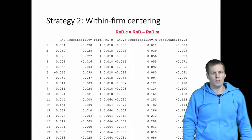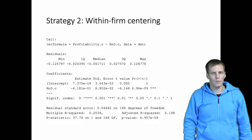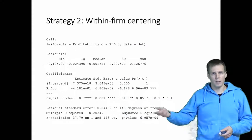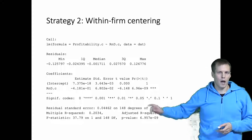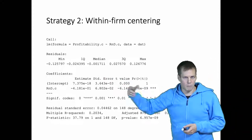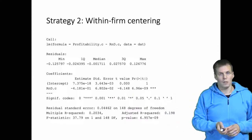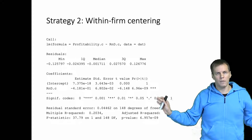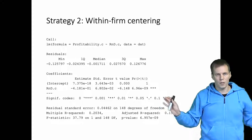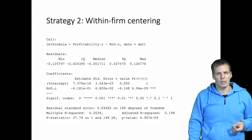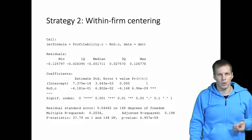Then we run a regression analysis using only the mean-centered dependent variable and the mean-centered independent variable, and we get the same regression estimate as before — the within effect. This is a regression analysis where all between effects and contextual effects have been eliminated from the data, and what remains is the within effect.